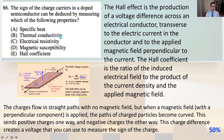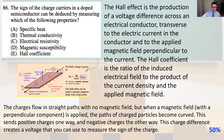Number 86. The sign of the charge carriers in a doped semiconductor can be deduced by measuring which of the following properties? The Hall effect is the production of a voltage difference across an electrical conductor, transverse to the electric current and to the applied magnetic field perpendicular to the current. When a magnetic field with a perpendicular component is applied, paths of charged particles become curved, sending positive charges one way and negative charges the other — creating a voltage you can use to measure the sign of the charge. That is answer E, the Hall coefficient.